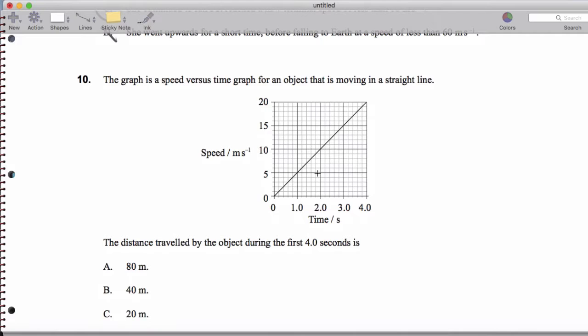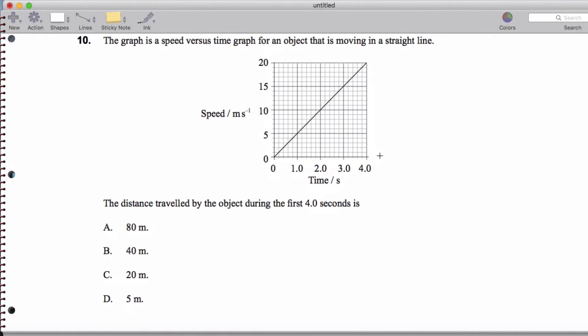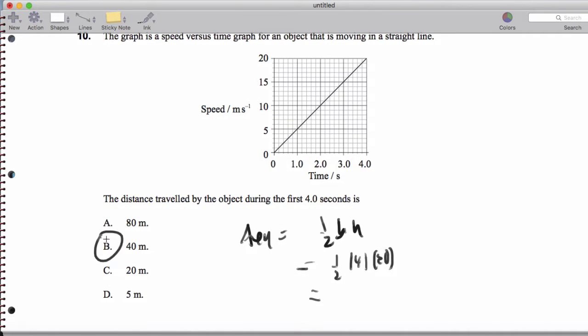Now we have a graph of distance versus time to get the distance traveled by the object during the first four seconds. That's the area under the graph. That's going to be one half base times height. It's going to be one half times four times 20. That ends up being four times 10, which is 40 meters.